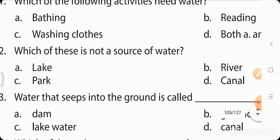Which of these is not a source of water? Lake, river, canal? Okay, park. Chalo, which one is not? Lake has water, yes. River, yes. Canal, yes. Park, no. Some parks don't have water. Yes, correct.